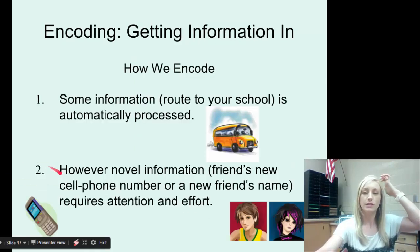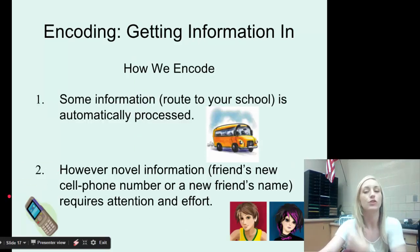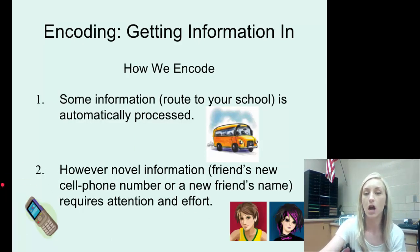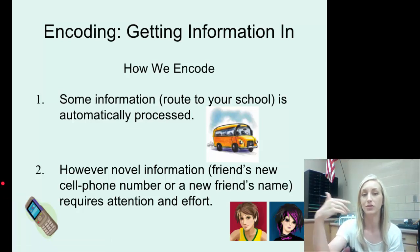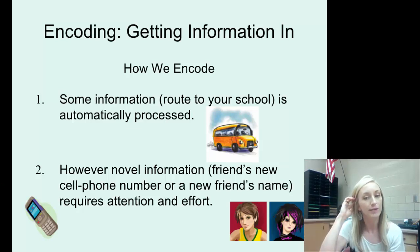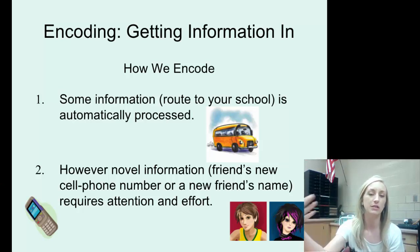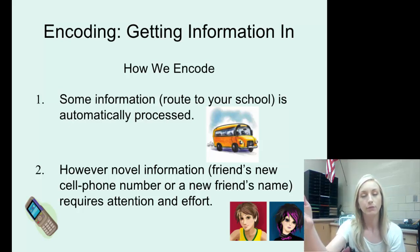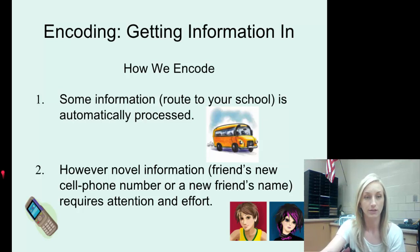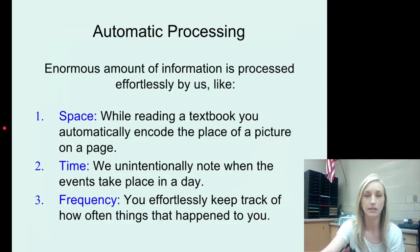How do we encode? Some information, like our route to school, is automatically processed — once we understand it, we just know it and do it. However, new or novel information, like a friend's new cell phone number or a new friend's name, requires attention and effort. We're going to talk about the difference between both of these.